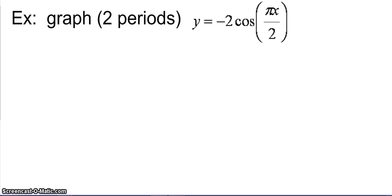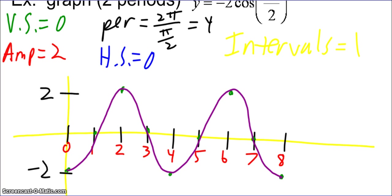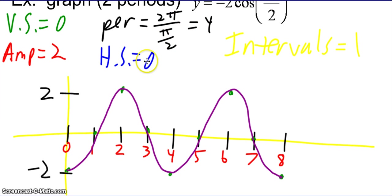Graph two periods of y equals negative two cosine of pi x over two. Pause the video and unpause when you're ready to check your work. The vertical shift is zero and amplitude is two. The period is two pi over pi halves, which is four, leading to intervals of one and a horizontal shift of zero.